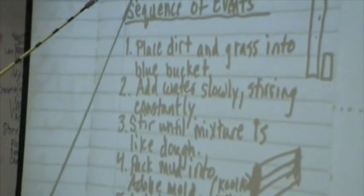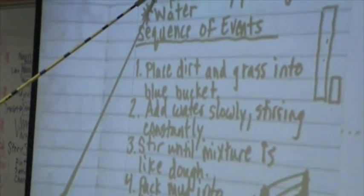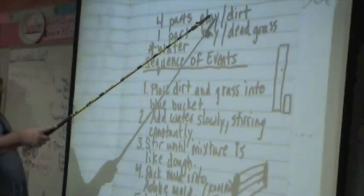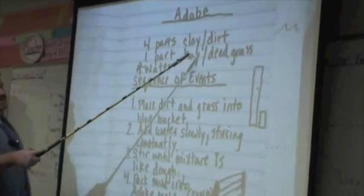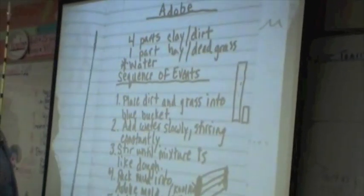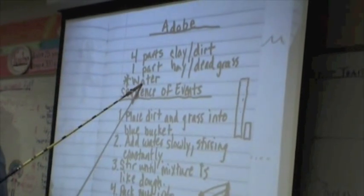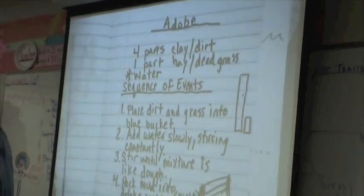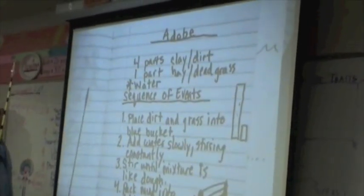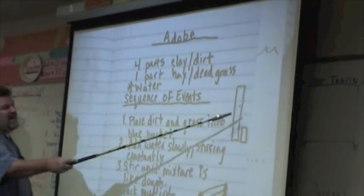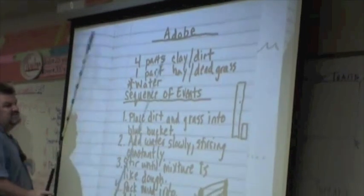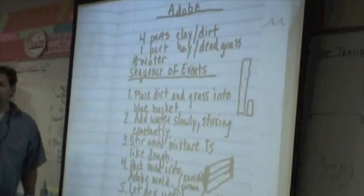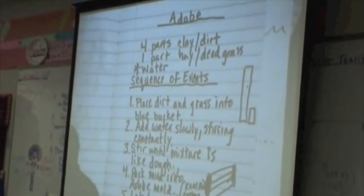We're going to use four parts clay and grass, one part hay and grass, and some water. When we're talking about parts, we talked about in math how if there's four parts of something, there is one part compared to the four parts — one out of four. We talked about ratios.